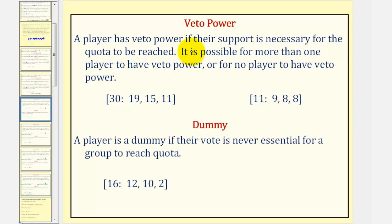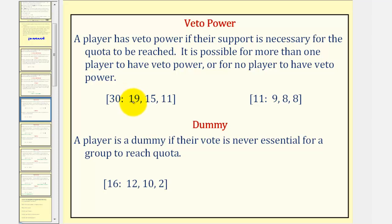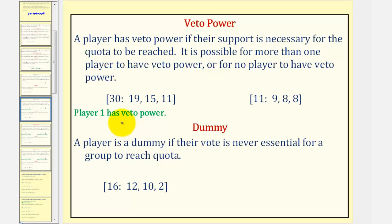A player has veto power if their support is necessary for the quota to be reached. It is possible for more than one player to have veto power, or for no player to have veto power. Looking at this first example, notice how player one is not a dictator, but if player two and three form a group, they only have a weight of 26, which is below quota. Therefore, player one is required to reach quota, and player one has veto power. But notice how player one and player three together have a weight of 30, which does reach quota, so player two is not required. And if player one and player two form a group, they have a weight of 34, more than quota, so player three is not required. So, player one has veto power.